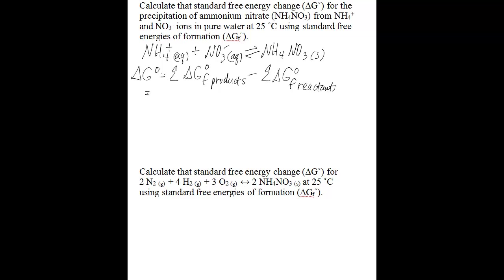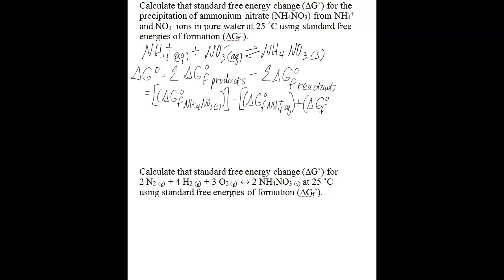You then subtract from that the standard free energy of formation values for the sum of the reactants. So in this case the values that you need are the standard free energy of formation for ammonium nitrate solid — that's your product — and you subtract from that the standard free energy of formation for ammonium in aqueous form, plus the standard free energy of formation for nitrate in aqueous form.